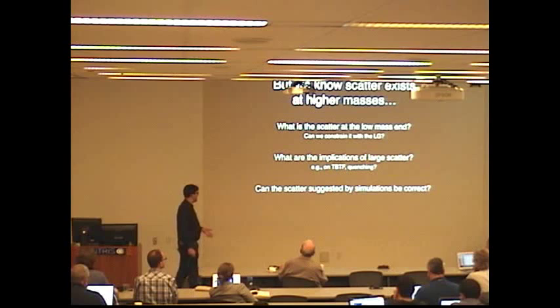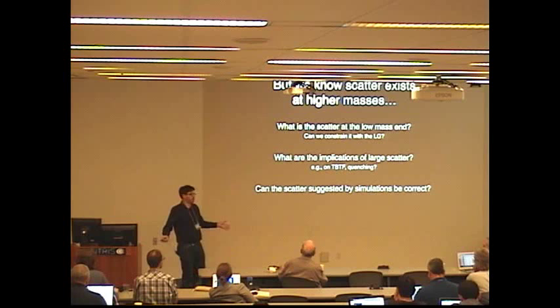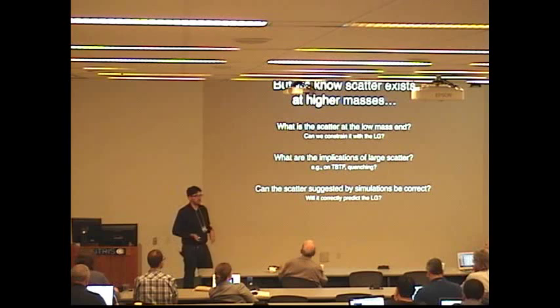What are the implications of that large scatter? Does it do anything to too big to fail? Will it change our predictions for quenching in any noticeable ways? And finally, can the scatter in the simulations at the dwarf scale, where there's a lot of scatter, actually be correct? Will they correctly predict the local group if you were to run a Milky Way-sized host?